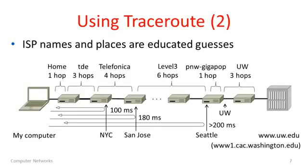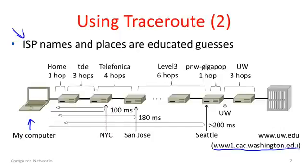Here I've taken the same information and laid it out a little differently to show the path between my computer and the destination www.uw.edu — which in the traceroute we saw was actually an alias for www1.cac.washington.edu. The ISP names shown are educated guesses based on the IP addresses and hostnames returned by TraceRoute. After one hop we were still inside the home network, and for the first three hops we're inside a network called TDE — probably some internal Telefonica network, still in Barcelona based on the BCN in the name.